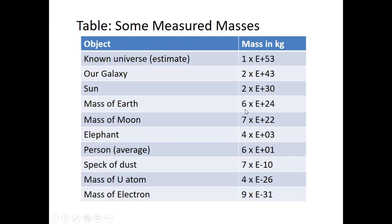A speck of dust is on the order of 10⁻¹⁰ kg — a very small number. The mass of a uranium atom is 4 × 10⁻²⁶ kg. The mass of the electron is something one must remember, as we will use it repeatedly in physics. It is approximately 9.1 × 10⁻³¹ kg, determined after J.J. Thomson's discovery of the electron.